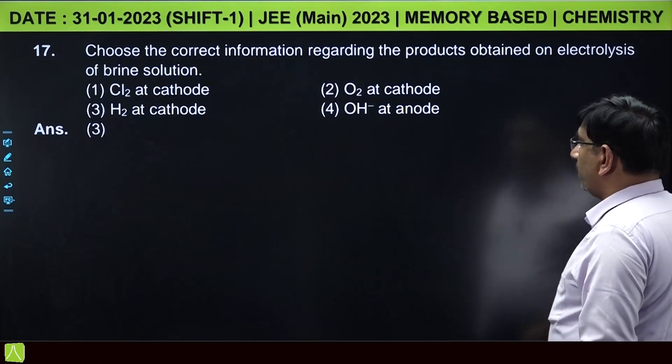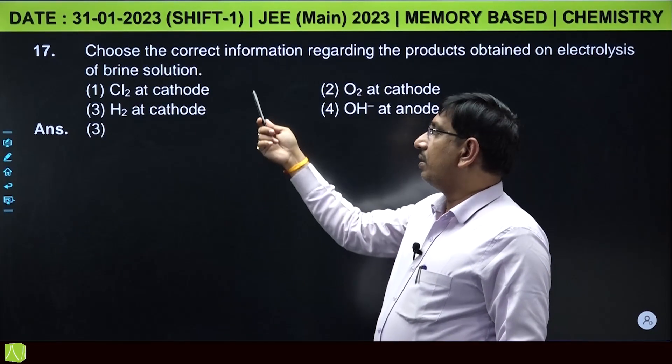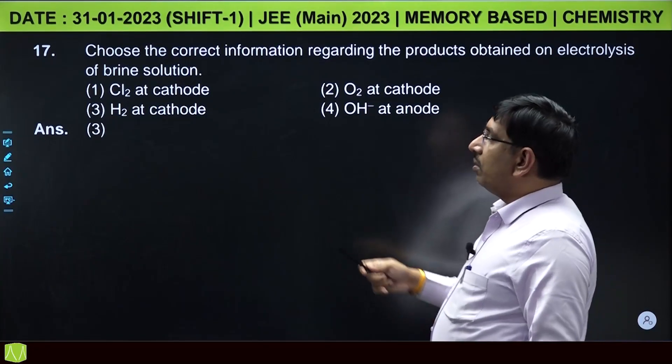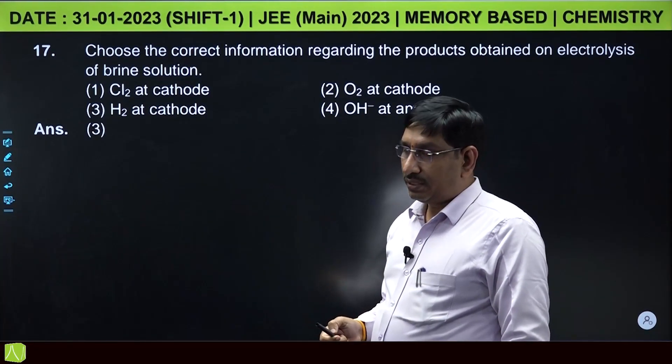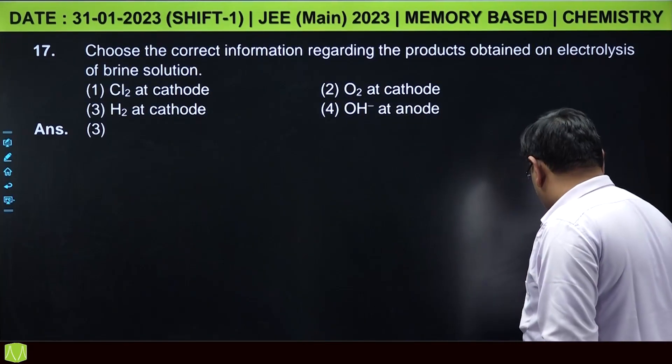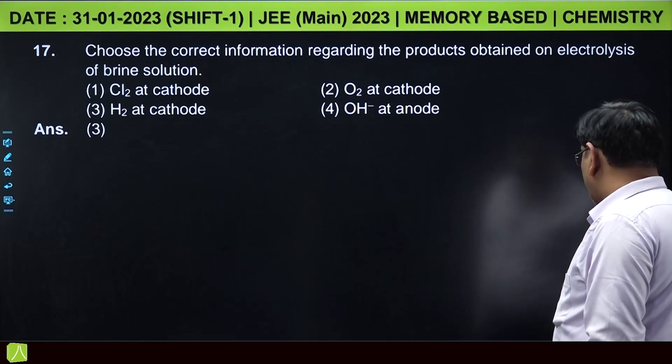Discharge potential is for water is less, so it will readily deposit, and H2O will undergo reduction and hydrogen gas and OH minus ions produce. At anode Cl minus will undergo oxidation and chlorine gas liberate. In the given options, chlorine at cathode, no. Chlorine at anode. O2 at cathode, no. Hydrogen at cathode, yes. OH minus at anode, no. So the correct answer is hydrogen at cathode.